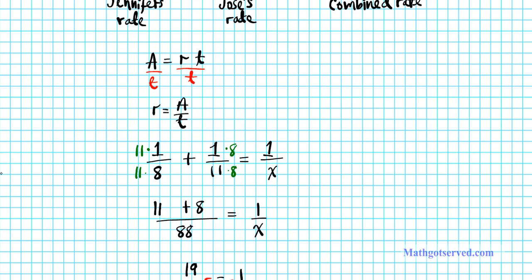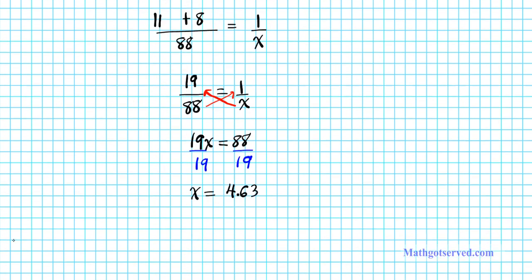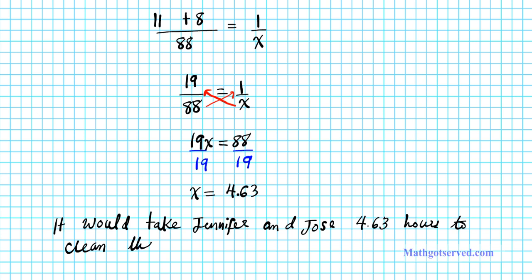So let's go ahead and put our answer in the context of the problem. So it will take Jennifer and Jose 4.63 hours to clean the attic if they worked together. So that's the combined time it takes them to complete that one task.